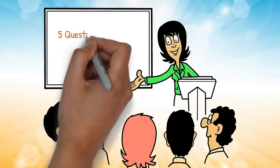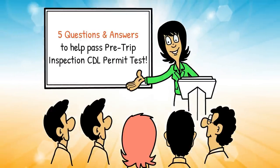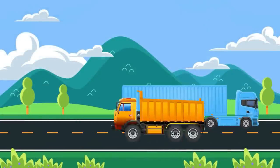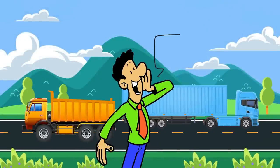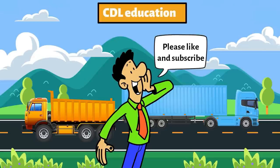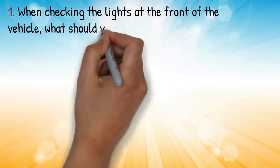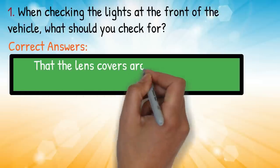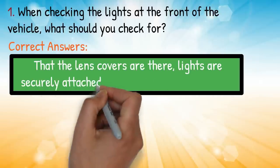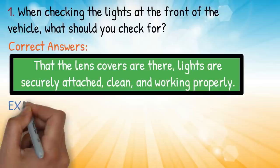Five questions and answers to help pass the pre-trip inspection CDL permit test. Before we get started, please like and subscribe if you enjoy and would like more content about CDL education. Question one: when checking the lights at the front of the vehicle, what should you check for? Correct answer: that the lens coverings are there, lights are securely attached, clean, and working properly.